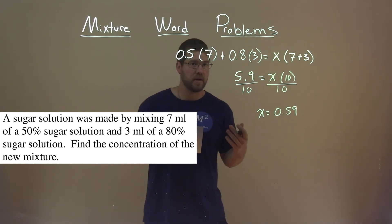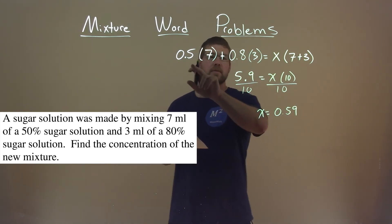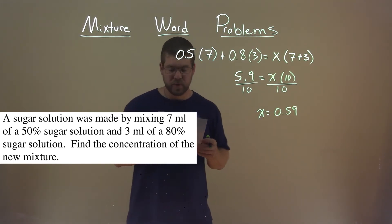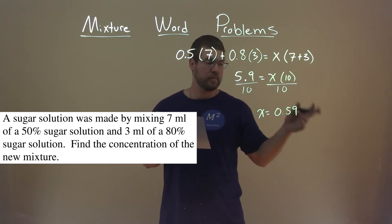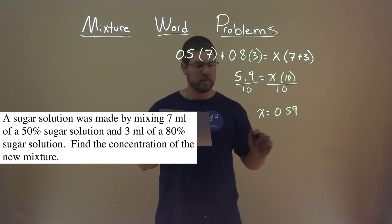But we're not done. Our decimals we're writing here, we converted from the percents, so when you write this as a percent, move the decimal place two spots to the right, and we have 59% here.